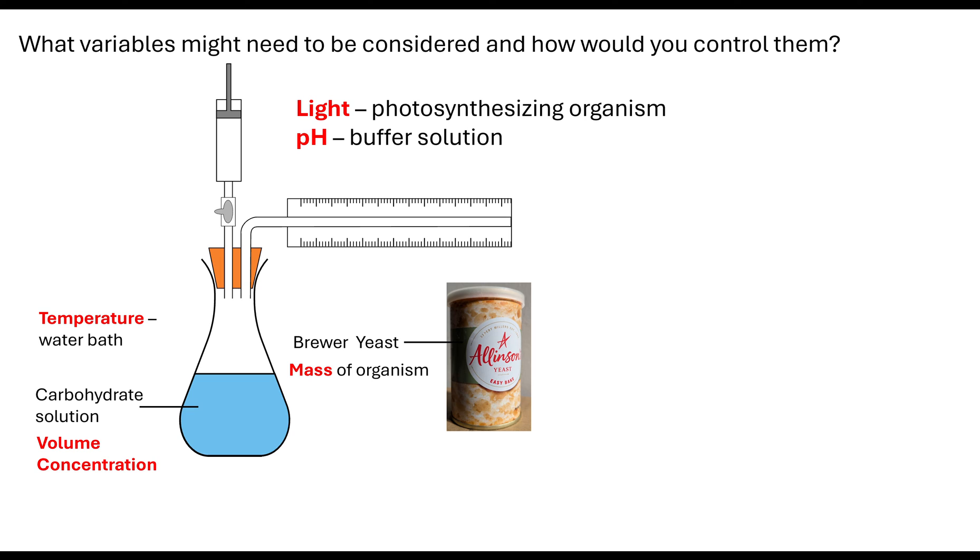And the other thing to consider is a pH buffer. So a pH buffer is obviously necessary because we're talking about enzymes, we're talking about proteins that could be denatured if the pH is not controlled. So you need to always consider your variables whenever you are doing an investigation.